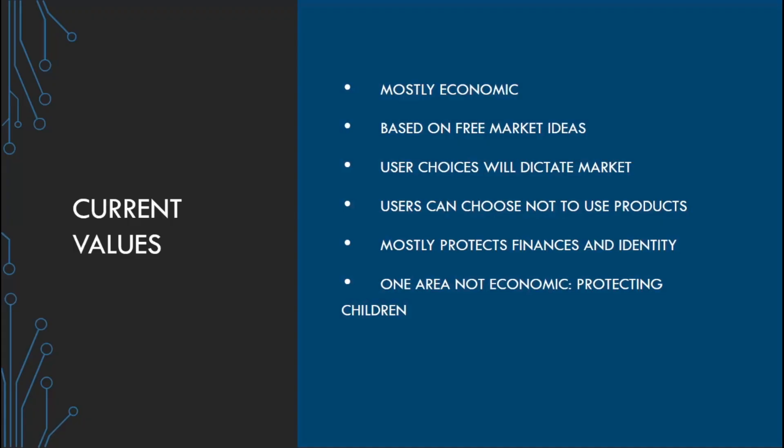Here in the U.S., most of the policies that the FTC refers to when making data decisions are mostly economic, and they serve to protect a person's finances or to protect their identity.